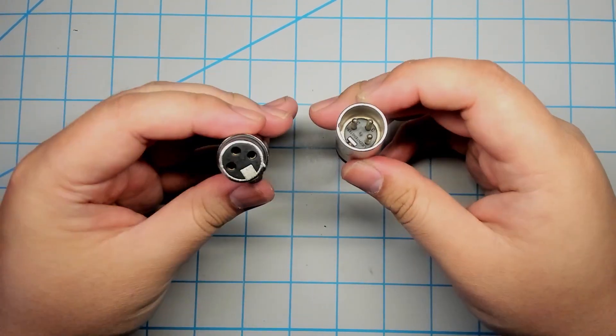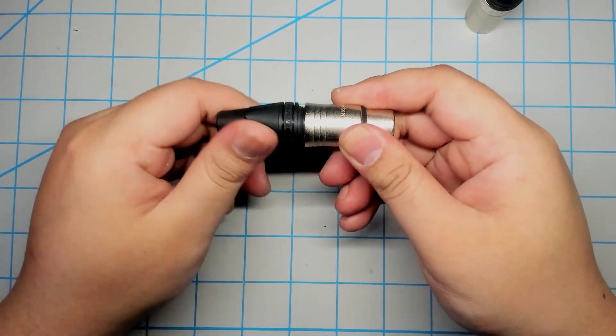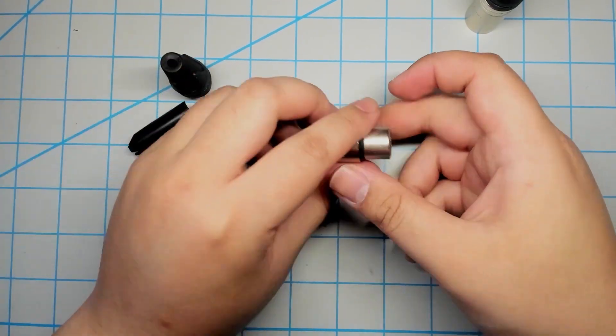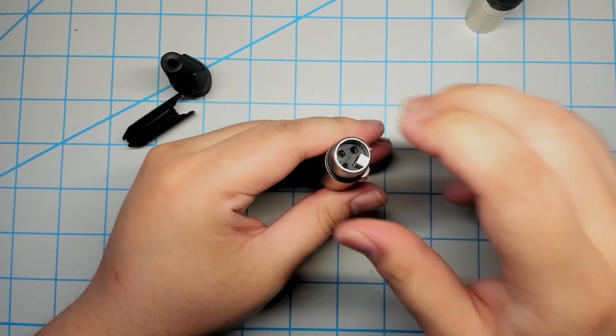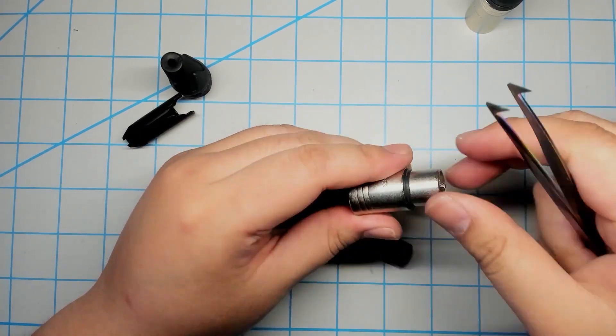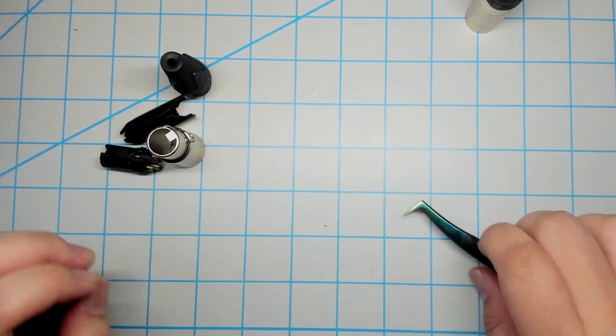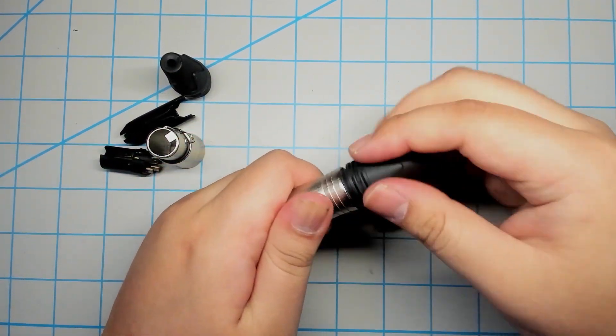Disassembling these connectors is straightforward. Both sides include a rubber butt end that twists off, an inner portion that secures the connector onto the cable, the contact points which we can take out with a little poke with the back end of a pair of tweezers, and the metal shell. Both sides can be disassembled in the same manner.